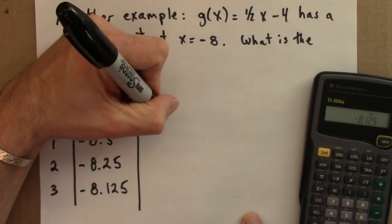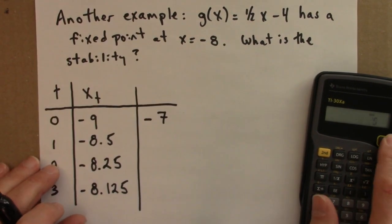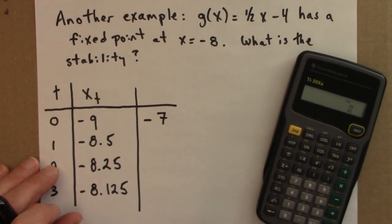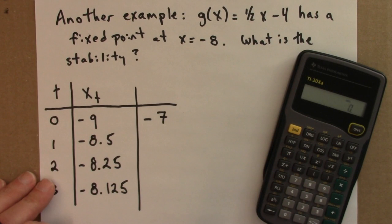What happens if we iterate minus 7? Let's see. I can just do it again on a calculator.